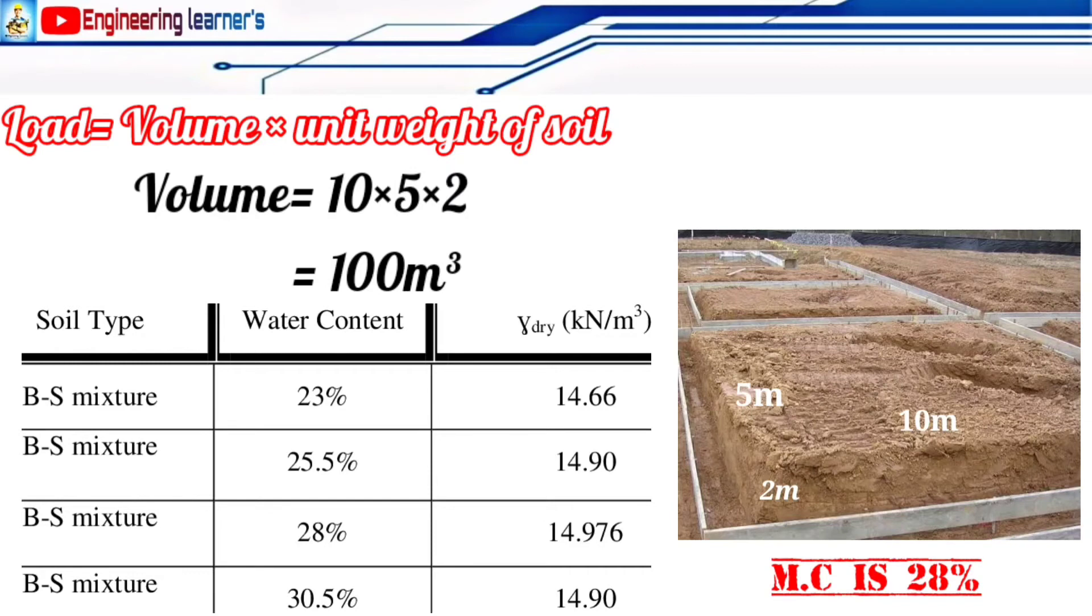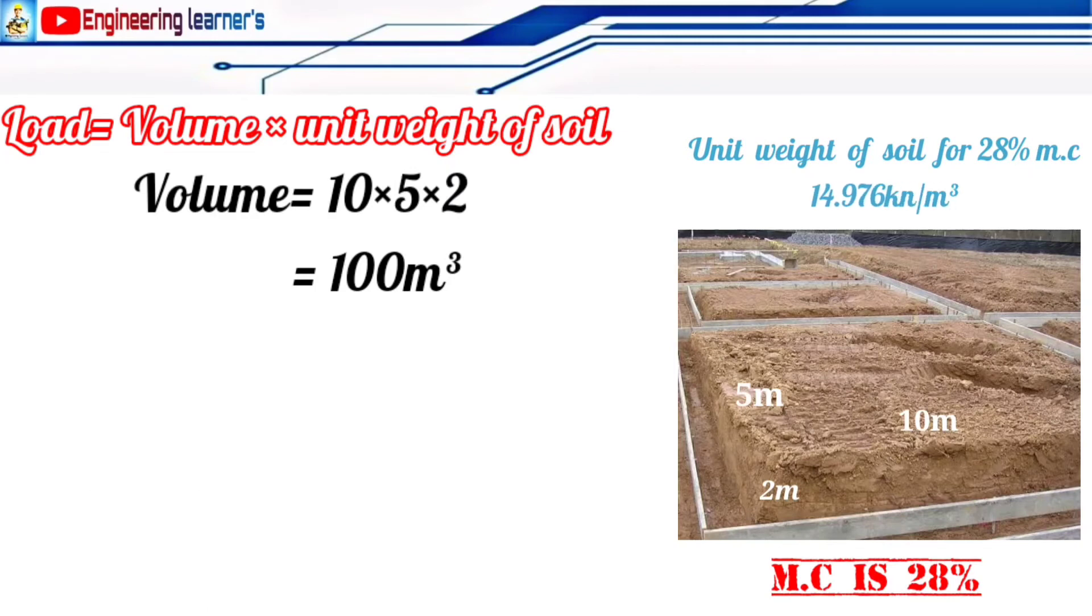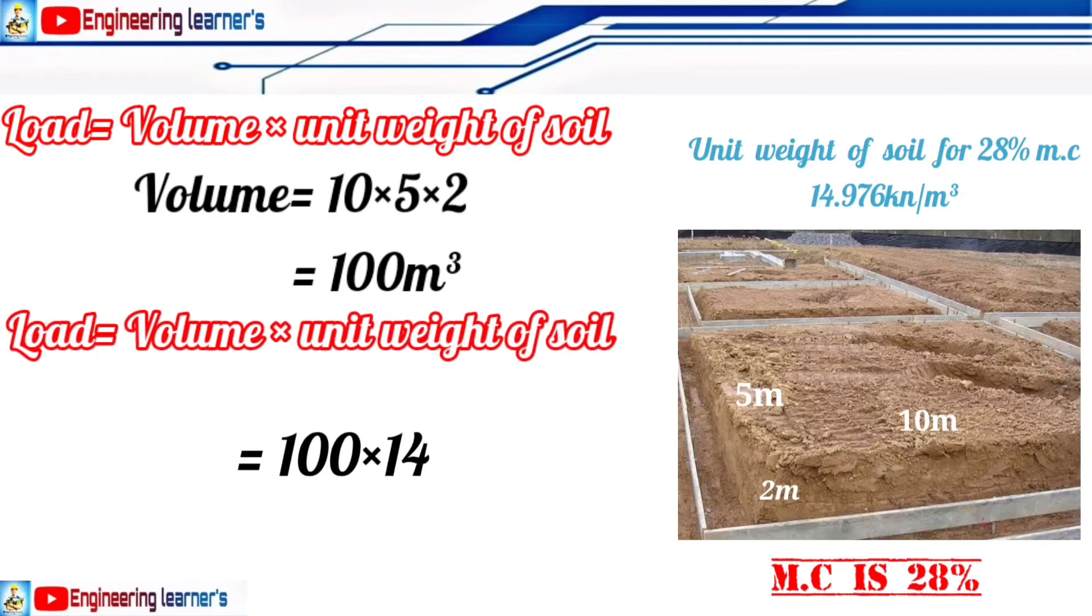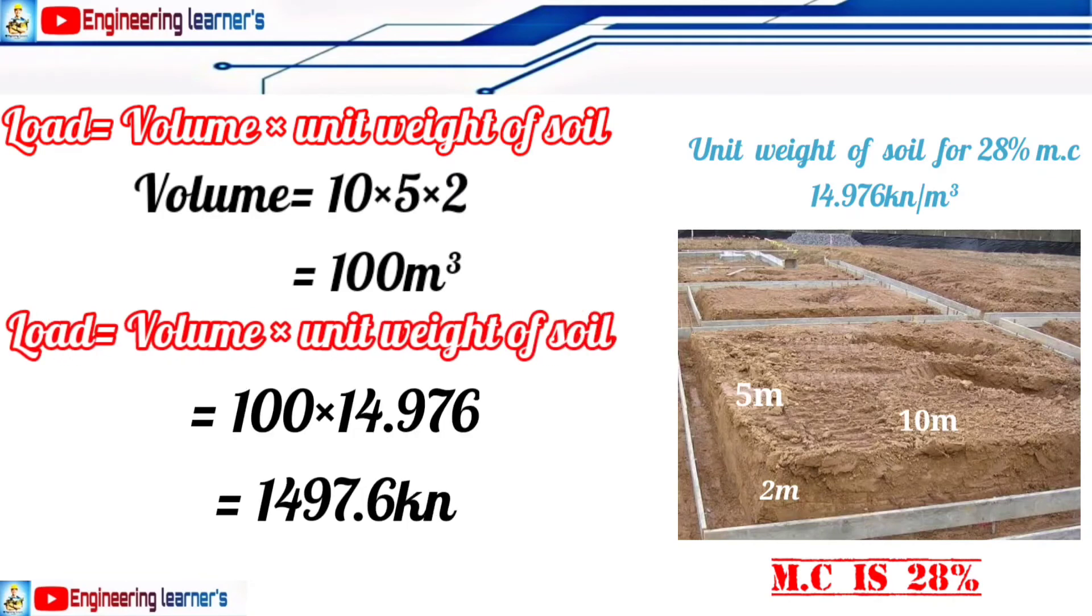which is 14.976 kilonewton per meter cube. So the load is equal to volume multiplied by unit weight. So volume is equal to 100 meter cube multiplied by 14.976, so you can get 1497.6 kilonewton.